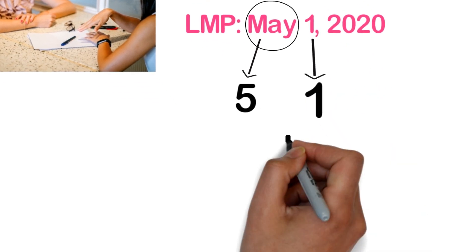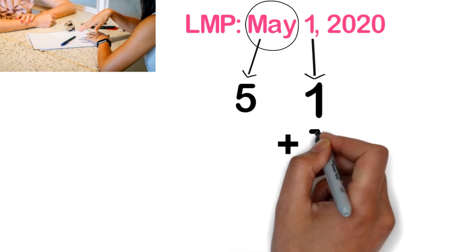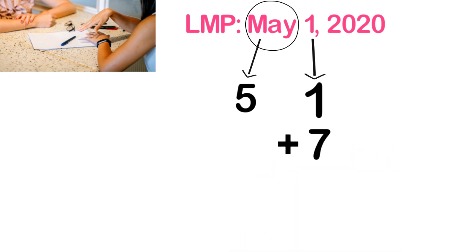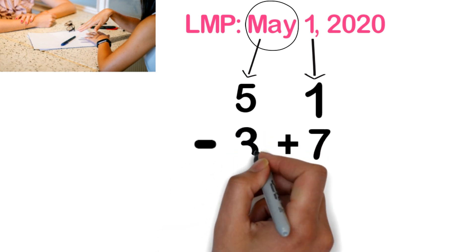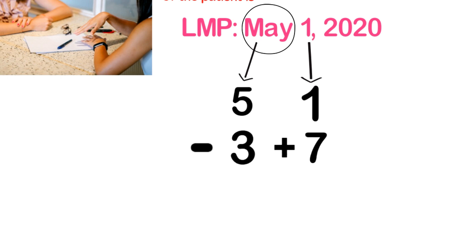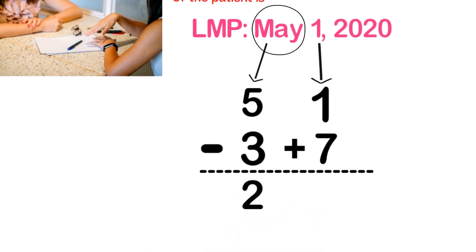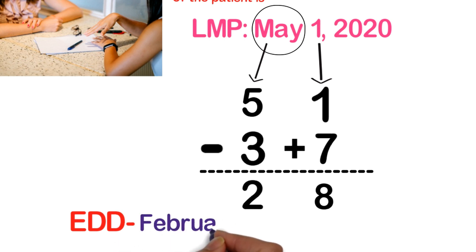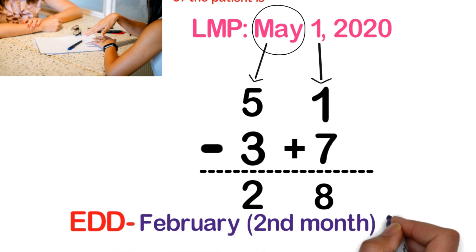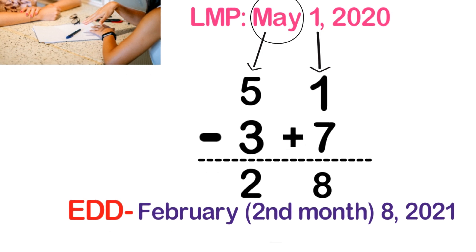We will add 7 to the day of that particular month, and we will subtract 3 from the month. When we calculate: 5 minus 3 equals 2, and 7 plus 1 equals 8. So our expected date of delivery is February — the 2nd month of the year — 8, 2021. This is how we calculate the expected date of delivery.